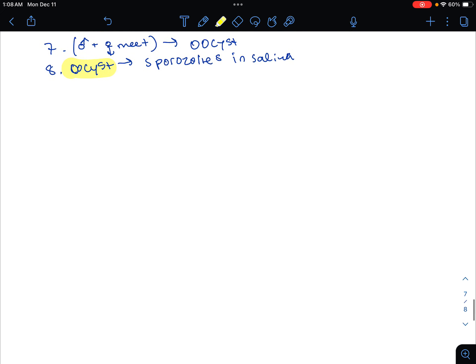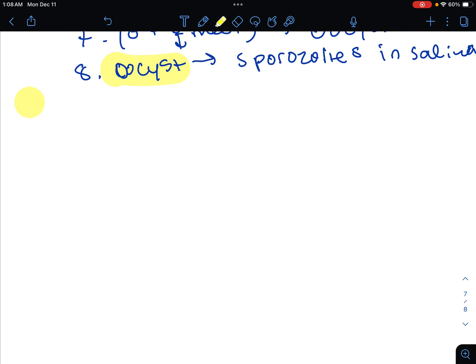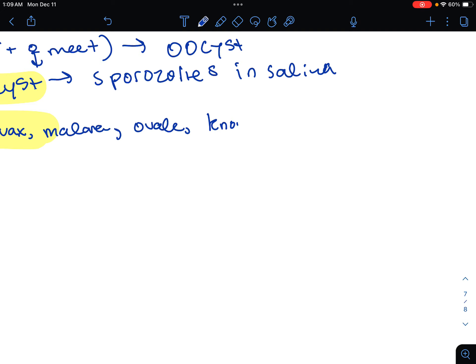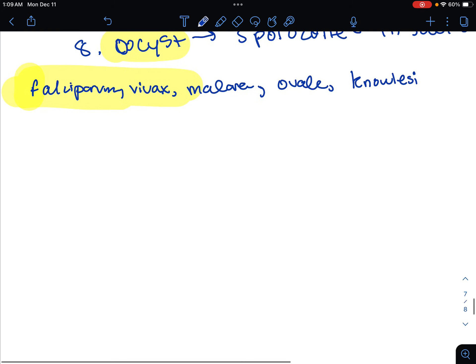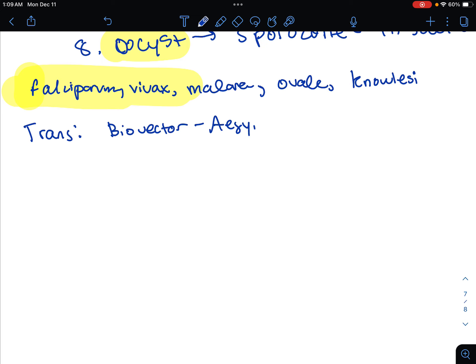The causative organism is going to be the plasmodium, many species. There's falciparum, vivax, malariae, ovale, and knowlesi. Transmission: we're going to have the biovector from the mosquito aegypti. Humans are our primary host.